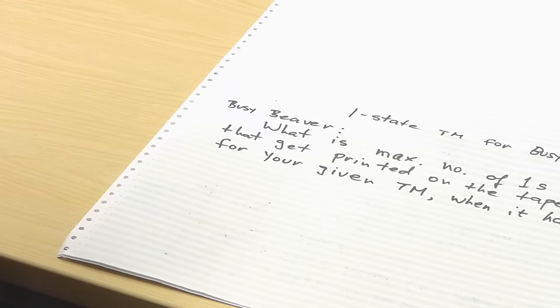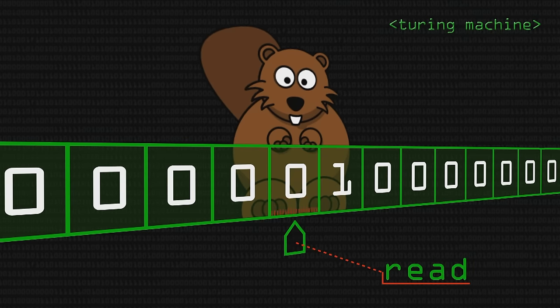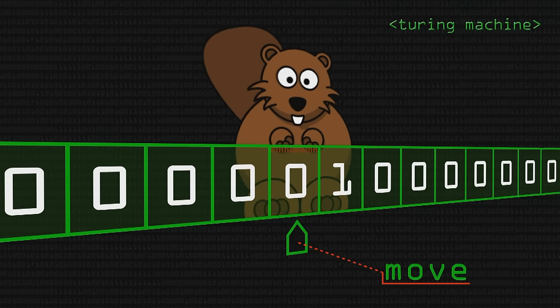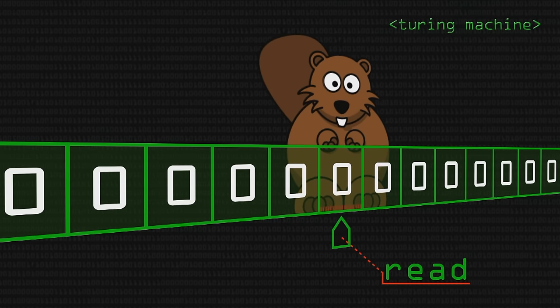The well-behaved ones must halt and stop, leaving a tape with lots of ones and zeros. It's called Busy Beaver because the program is just going bananas, walking up and down the tape writing ones and zeros in accordance with the program instructions. The question is: how many ones do you end up with? What's the best you can do?